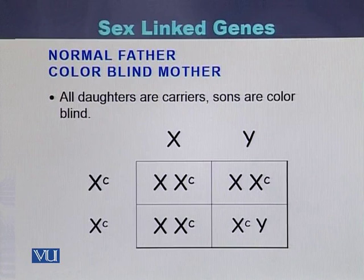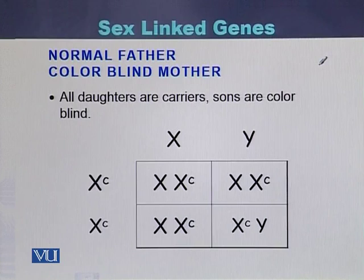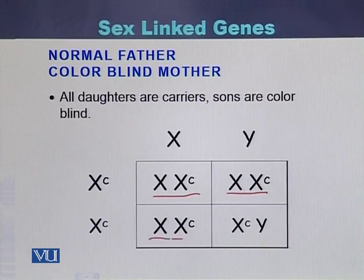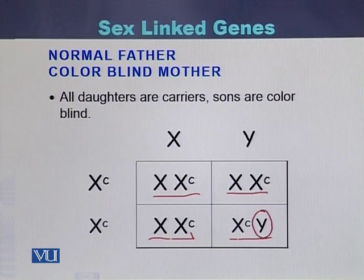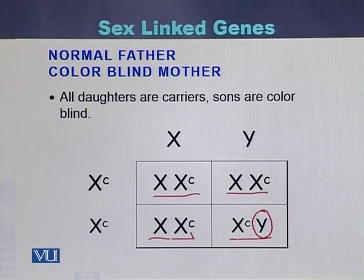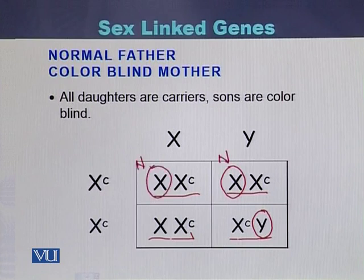If we perform a cross between a normal father and a color blind mother, all the daughters will be carriers and all the sons will be color blind. Because there is no alternative X chromosome in the case of males — there is only a Y chromosome — a single affected allele on the X chromosome causes the sons to be color blind. The daughters will be carriers because they have a normal allele on the other X chromosome.